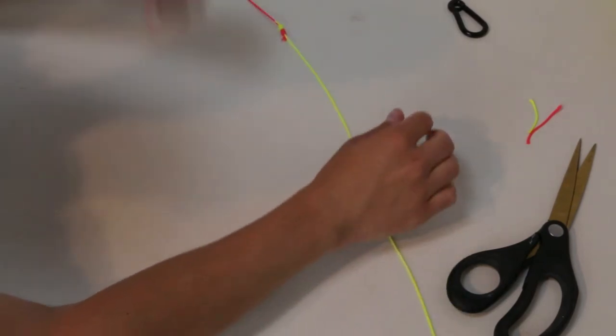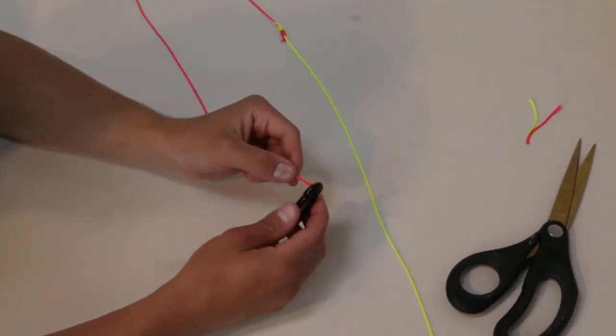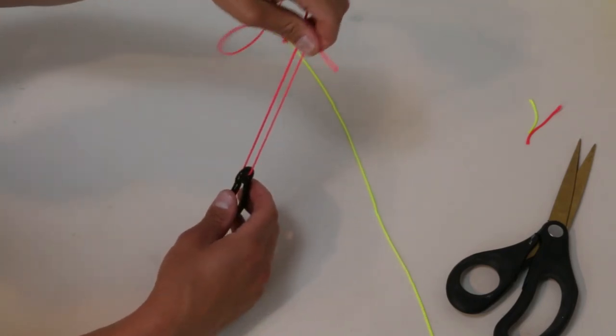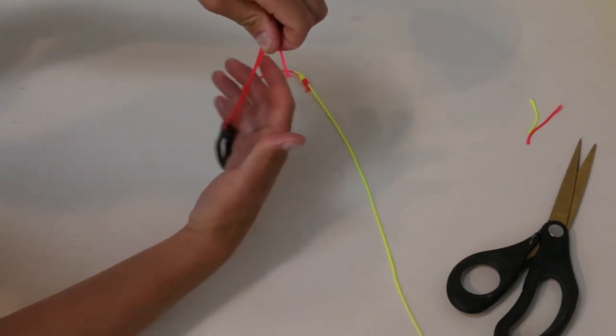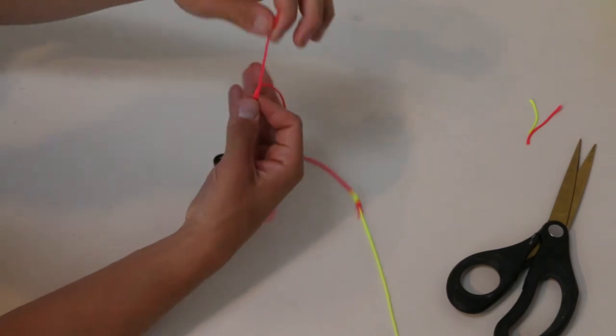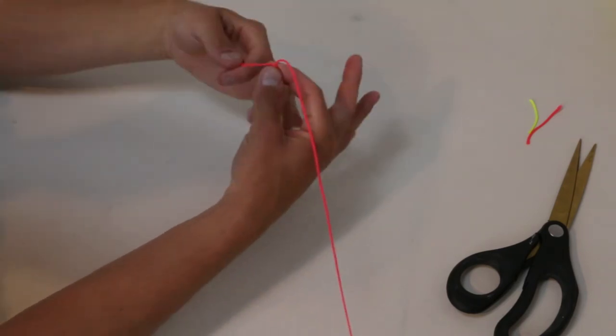So now we can take this and attach it to our eye of the hook. Just as before, thread it through the eye. Pinch the intersections. Throw a loop.